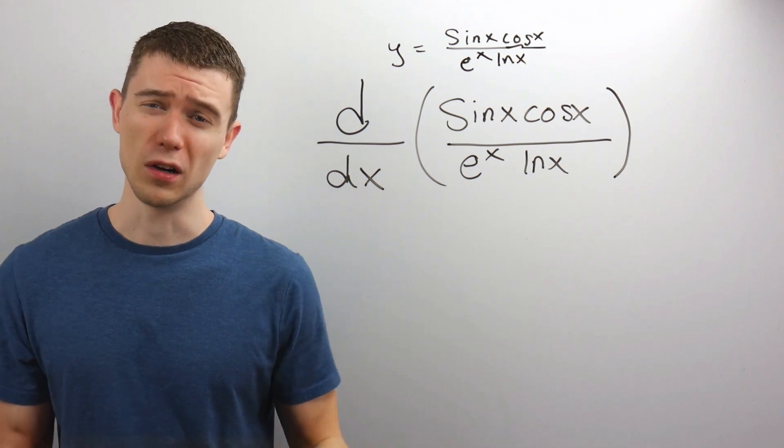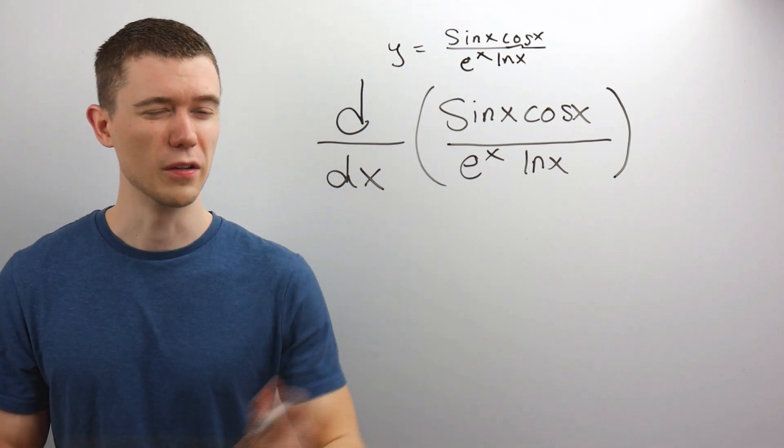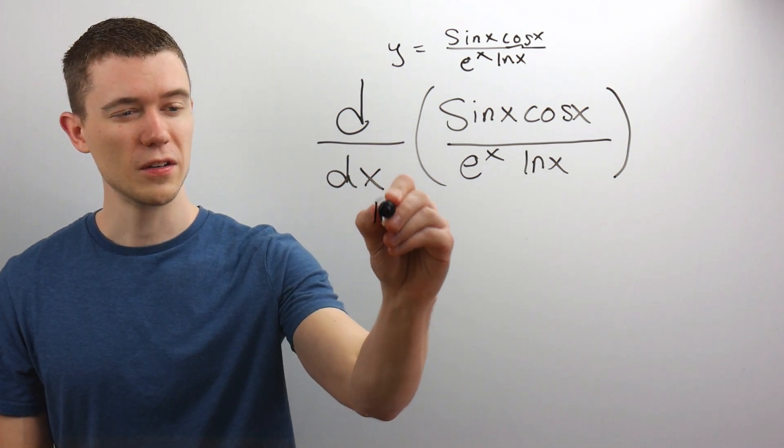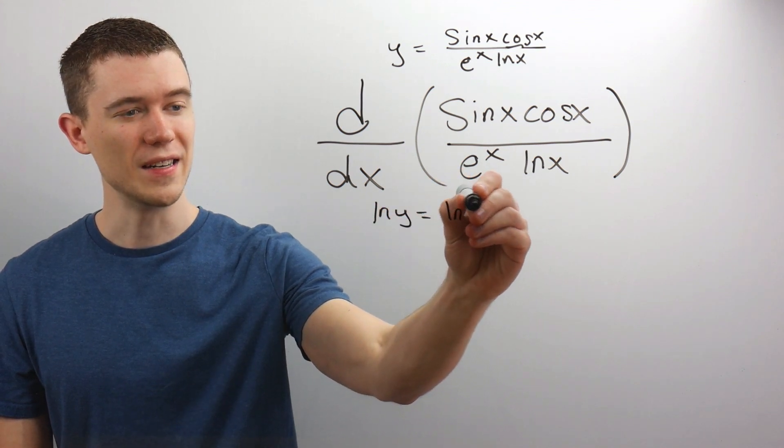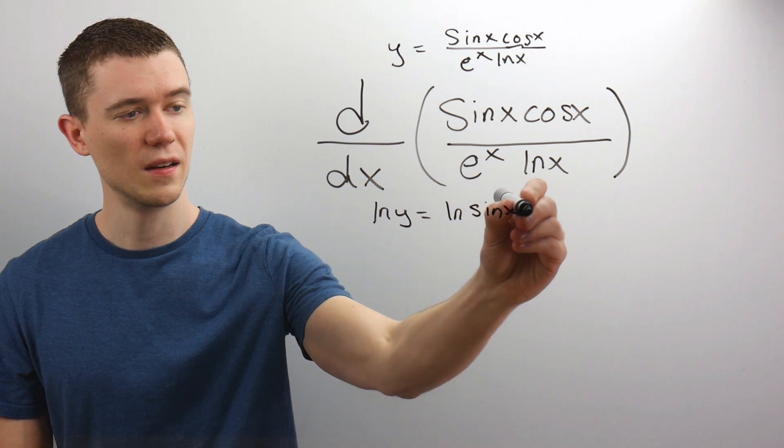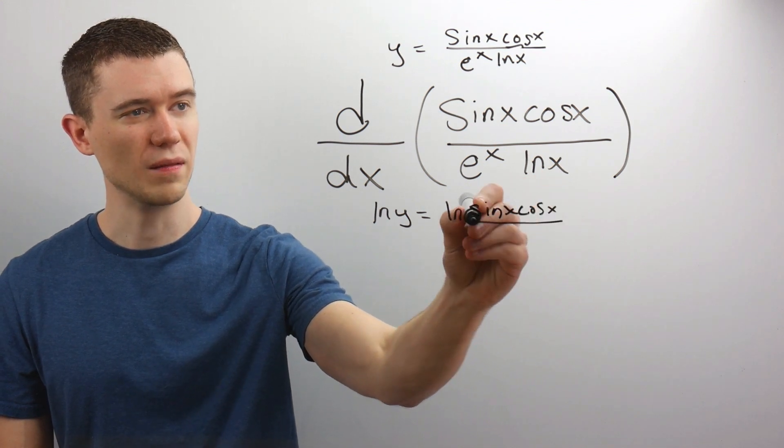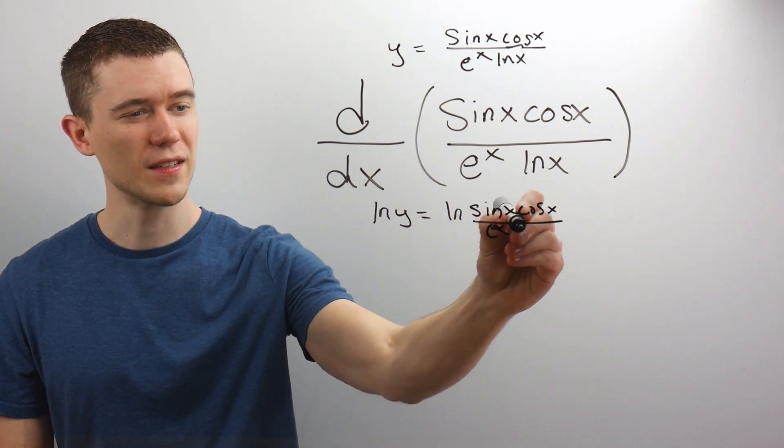Why am I doing that? I'm going to take the log of both sides, the logarithm, the natural logarithm even. So this would mean that natural log y is natural log of this nonsense, natural log of the whole thing. Why am I doing this?